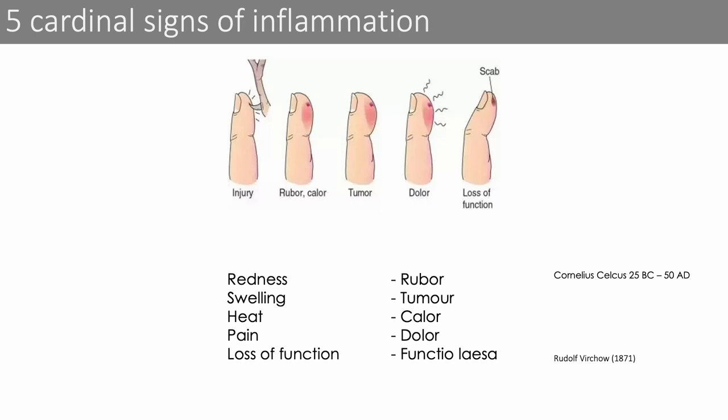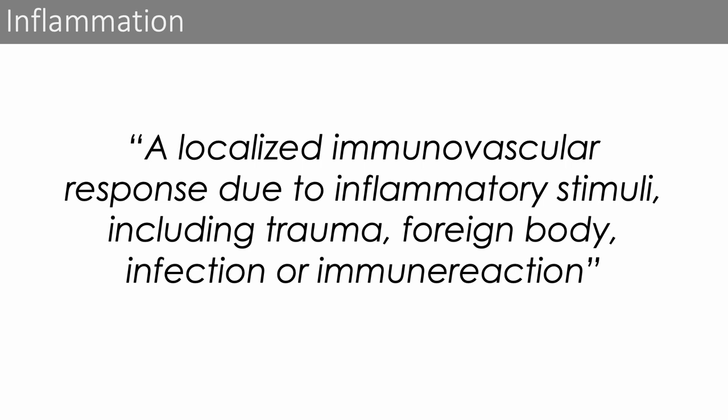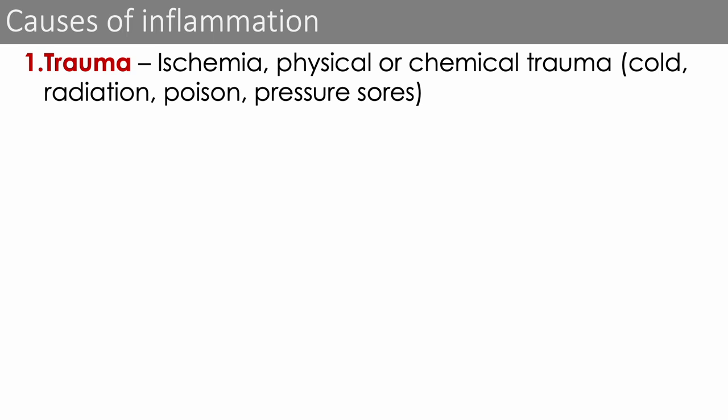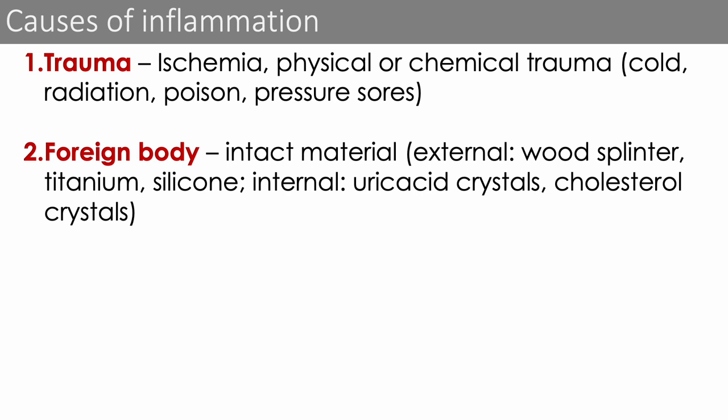Looking back at the definition, we get the four main causes of inflammation: trauma, foreign body, infection, or immune reaction. Trauma can include ischemia — reduced blood flow and thus reduced oxygen — as well as physical or chemical trauma such as cold, radiation, or poison, and pressure sources. Foreign bodies are usually intact materials; they can be external such as wood splinters, titanium or silicone implants, or internal such as the formation of uric acid or cholesterol crystals.